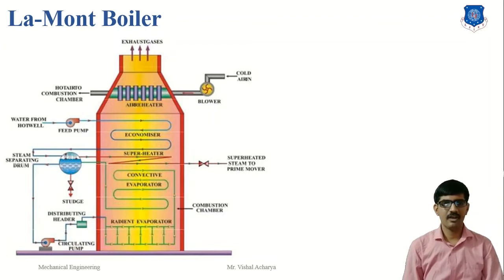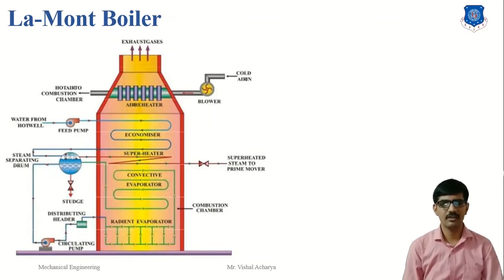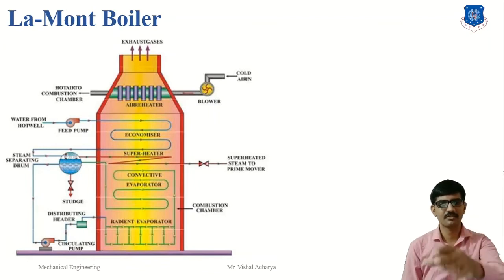What is the Lamont boiler? Lamont boiler is a high pressure forced circulation water tube boiler with internally fired furnace. An external pump is used to circulate the water within the small diameter water tubes of the boiler. This boiler was invented by Walter Douglas Lamont in the year 1925, originally intended for use in ships.